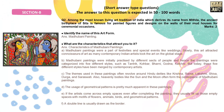Section B contains short answer type questions and you have to write it in 50 to 100 words, each carrying two marks. In question number two, you have to identify the art form and write the characteristics of that art form.